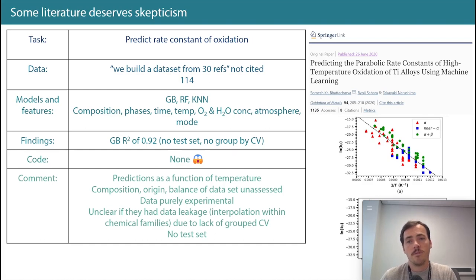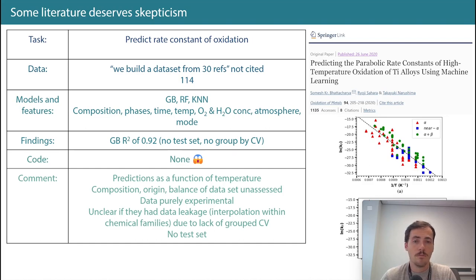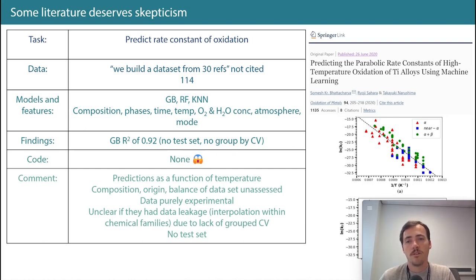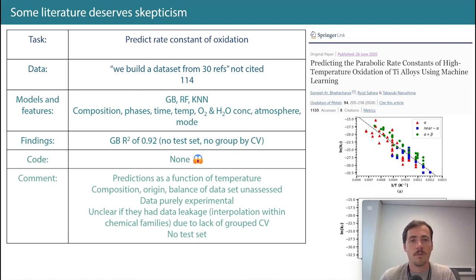The features they used are very different from what we've seen before. They used composition — seemingly one-hot encoded — plus phases, time, temperature, the environment in which corrosion is taking place, the atmosphere, and whether the mode is cyclic or not. They report a gradient-boosted R² of 0.92, but they didn't do a test set.